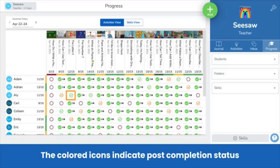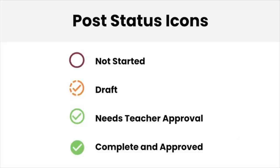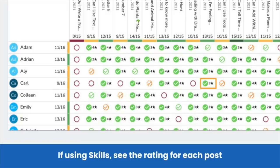The colored icons indicate post-completion status. An empty red circle means the student has not yet started the activity. An orange check means the post is saved as a draft. An unfilled green check means the post is waiting for teacher approval, and a filled green check means the post is complete and approved. Click on a post status to view the post. If there's a skills mastery rating associated with the student post, the star rating shows next to the post status.